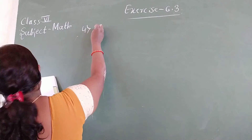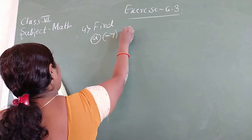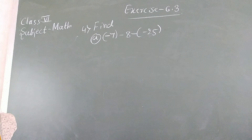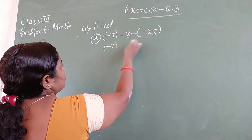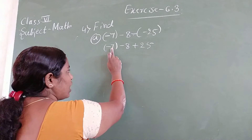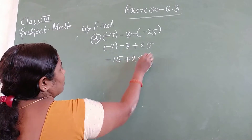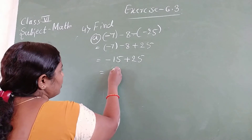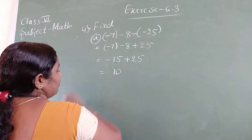Fourth question, part A: minus 7 minus 8 minus into bracket minus 25. Simplify. Minus 8 minus into minus gives plus 25. Minus 7 and minus 8 are both minus, so add: 7 plus 8 equals 15. Then minus 15 plus 25 — different signs, go for subtraction: 25 minus 15 equals 10. Because 25 is bigger than 15, answer is positive 10.